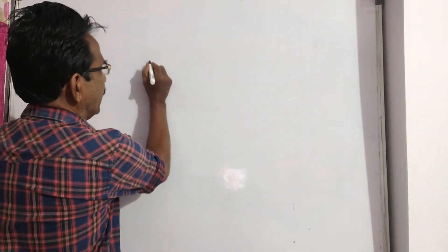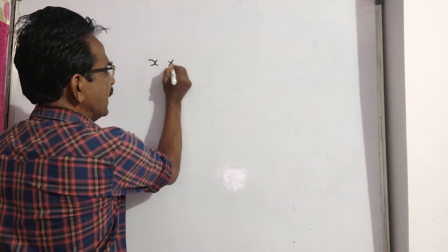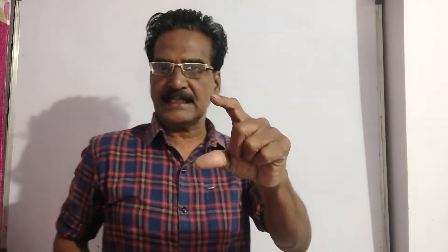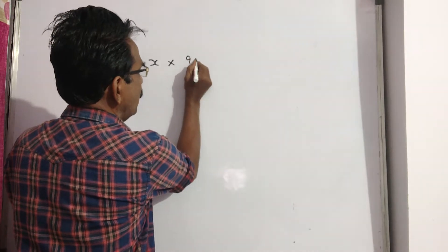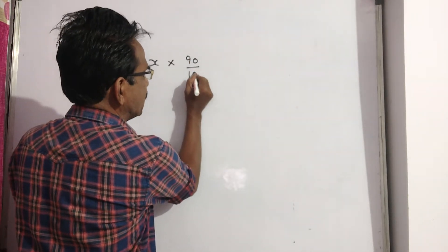So then what is the market price of the article? Friends, say the market price of the article is x, and 10 percent discount is given on this. So then the sold price becomes 90 percent, since 10 percent discount is given.